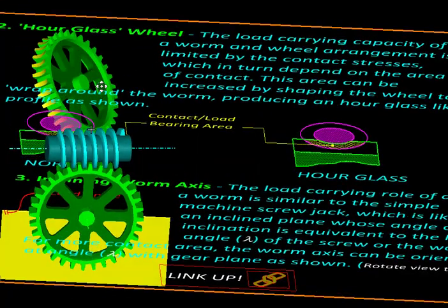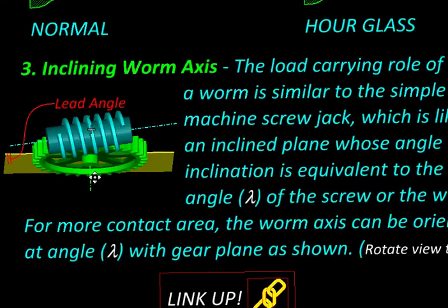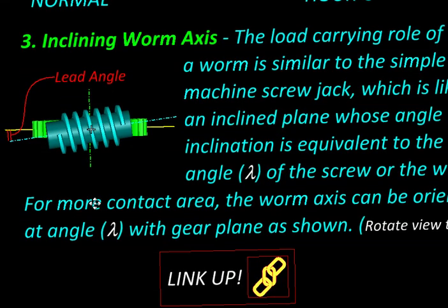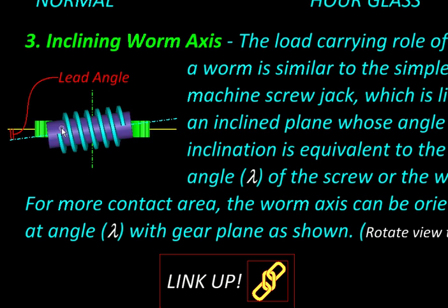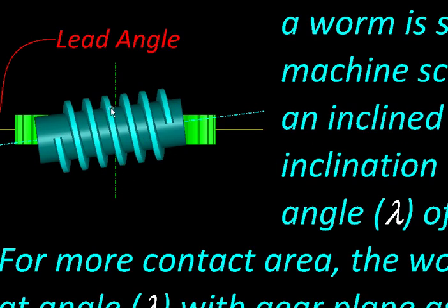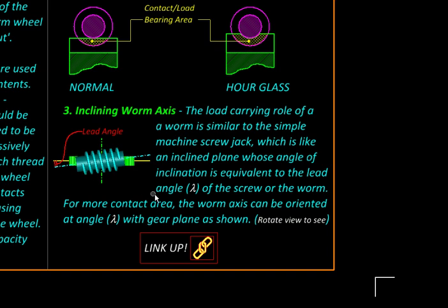You will see the plane of the worm wheel is making some angle with the worm axis, and this allows the worm thread to align well with the worm wheel teeth, thus increasing the contact area. The angle here is called the lead angle. To think of it simply, you can remember that any helical element is like an inclined plane wound around a cylinder, and the angle of inclination of that plane is nothing but this lead angle.